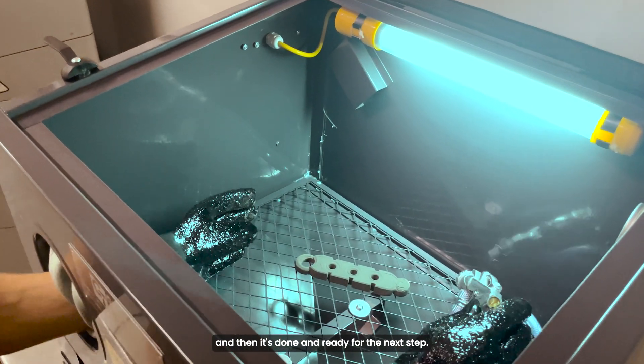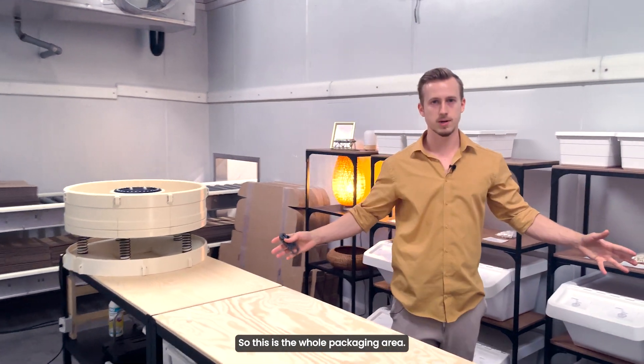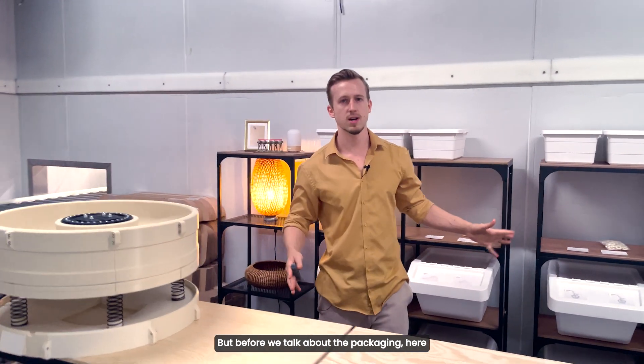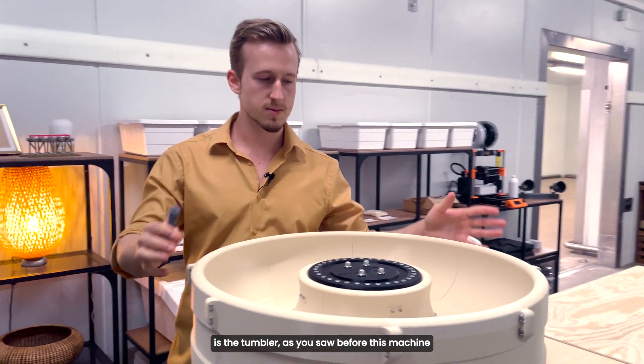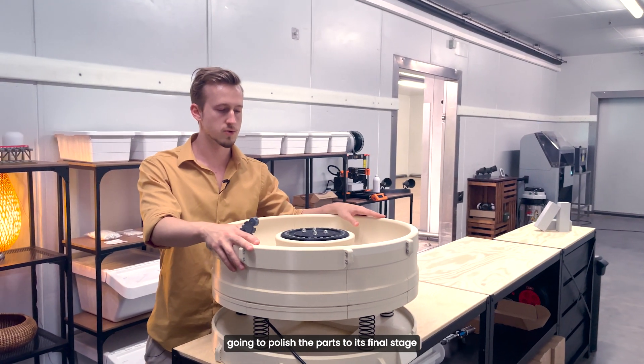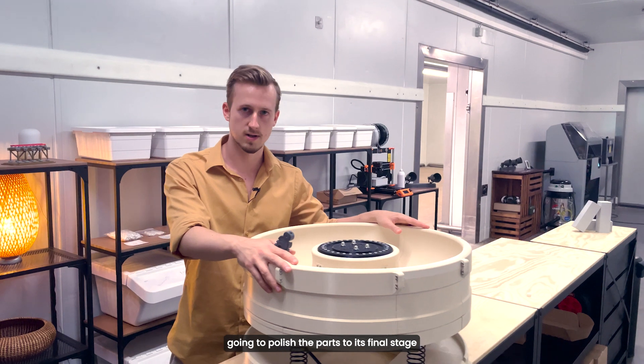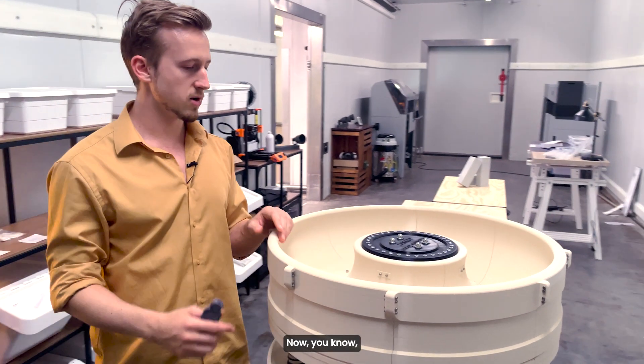All right, so this is the whole packaging area. But before we talk about the packaging, here is the tumbler as you saw it before. This machine and two new machines that I'm working on is going to polish the parts to its final stage where it's ready to be painted.